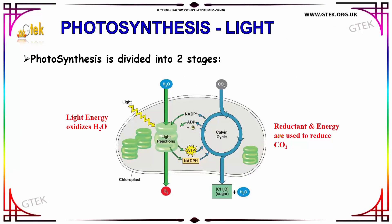Now we are going to see about an important factor of photosynthesis — that is light. Photosynthesis is divided into two stages: the process which uses sunlight, and the process which does not use sunlight. Here you can see the light is absorbed by the thylakoid, but in the Calvin cycle there is no light energy.